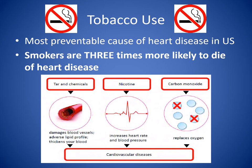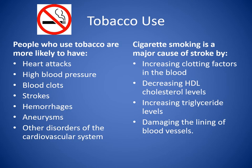Tobacco use is another big risk factor for heart disease, and it's one of the most preventable causes of heart disease in the US. Smokers are three times more likely to die of heart disease, and it causes a lot of damage in the blood vessels and your heart. You're more likely to have a heart attack, blood clots, stroke, hemorrhage, and aneurysms. It decreases your good cholesterol, increases your fat levels, increases your clotting factors, and damages the lining of your blood vessels. This includes any tobacco product — cigarette smoking, vaping of nicotine, dip, and other tobacco products.